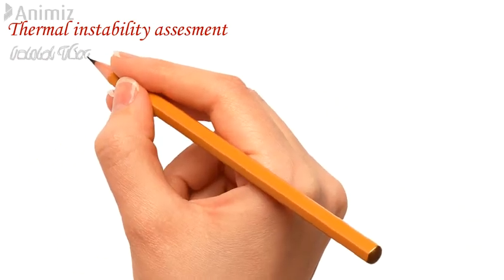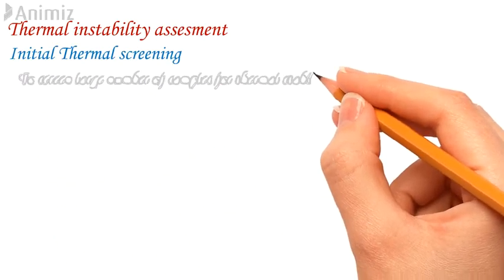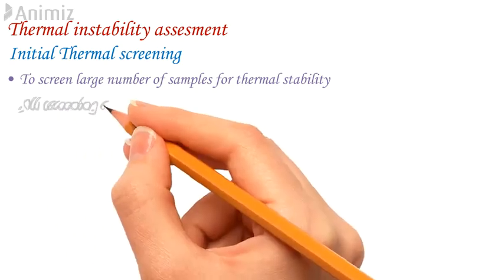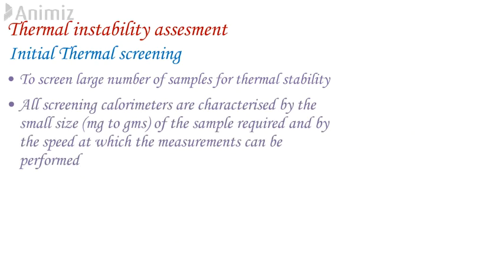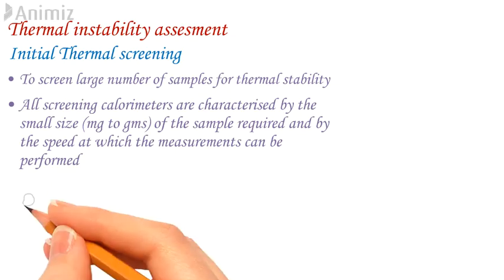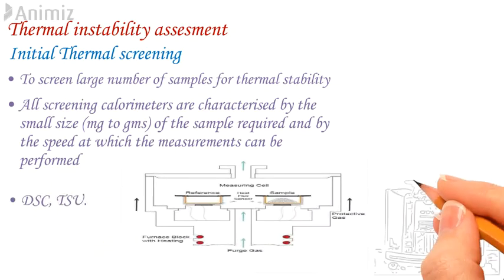Second, initial thermal screening. Thermal screening is done to screen large numbers of samples for thermal stability. All screening calorimetry are characterized by the small sample size, milligrams to grams required, and by the speed at which the measurement can be performed. Some of the calorimetry that can be used are DSC and TSU.